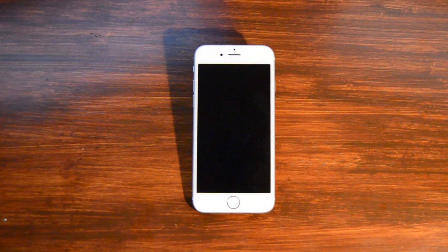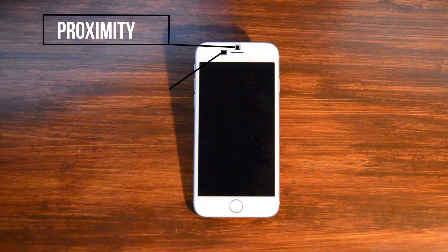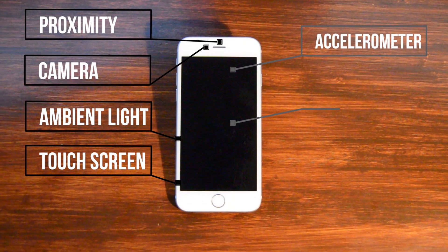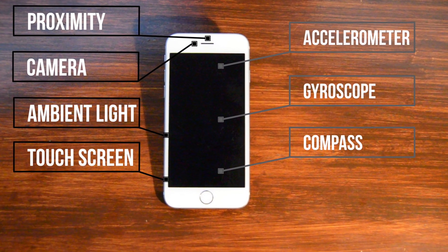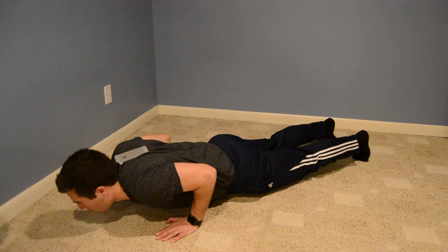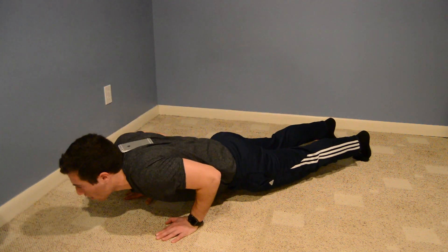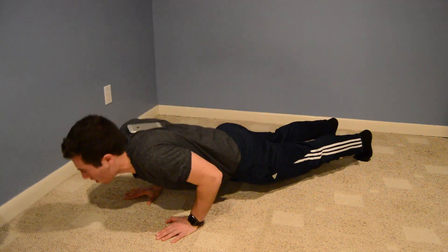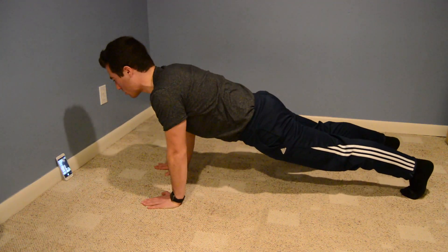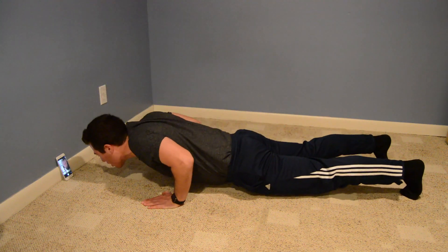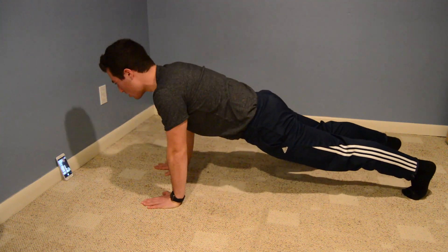I first looked at a list of the various sensors on an iPhone, which include proximity sensor, camera, ambient light sensor, touch screen, accelerometer, gyroscope, and compass. I thought of possibly using the gyroscope by having the user place their phone on their back, but I realized that would be a big hassle. I also thought of using the camera to recognize a push-up, but that requires computer vision and complex programming.